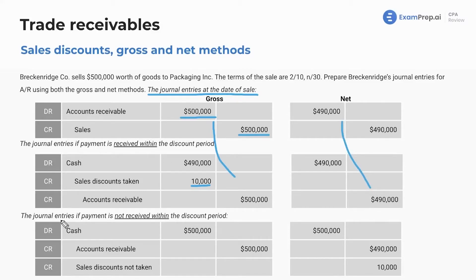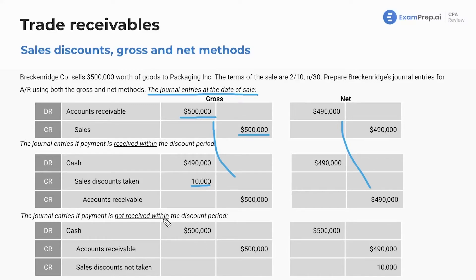What about the journal entry if the payment is not received within the discount period? Well, this is in replacement of the prior journal entry. You're still going to debit cash for what you receive — there's no discount, so you got $500. Under the gross method, this is when you would reverse out AR. Under the net method, this is when you would reverse out AR and reverse out the discount as well.